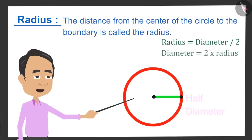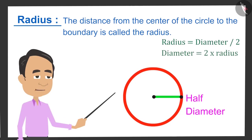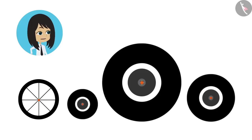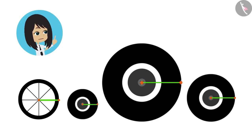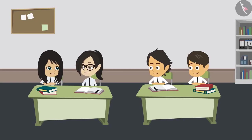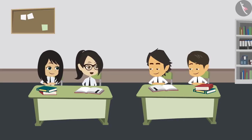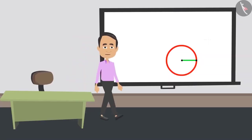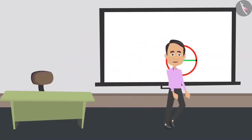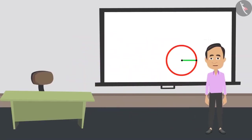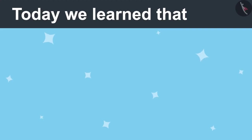So it can also be called half diameter. That means if we measure the distance from the center of the wheels to the boundary, then we will know their radius. Yes. And we can also tell the difference between wheels when we know the radius of different wheels. Absolutely right. Now you have understood how to measure a circle. So now you can measure the wheels you were asking about.